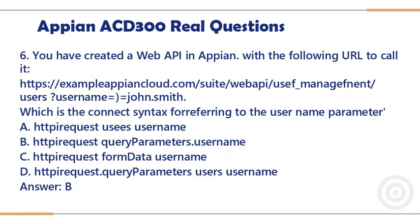Question 6. You have created a web API in Appian with the following URL to call it: https://example.appiancloud.com/suite/webapi/yusuf_managefinit/users?username=john.smith. Which is the correct syntax for referring to the username parameter?